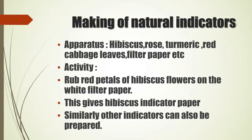Similarly, rub rose petals on white filter paper, cut strips of paper — it is rose indicator paper. Take turmeric powder, add a little water to it, dip filter paper or ordinary paper in the turmeric water for some time. After drying, make strips of that paper — this is turmeric indicator paper. Put leaves of red cabbage in a small quantity of water and heat it. Once the solution cools down, dip paper in it and dry it. Make strips of dried paper — this is red cabbage indicator paper.